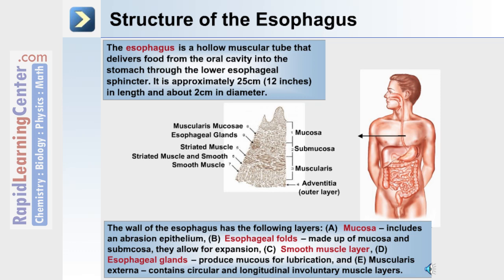The wall of the esophagus has the following layers: A) the mucosa, which includes an abrasion epithelium; B) esophageal folds, which are made of mucosa and submucosa and allow for expansion; C) a smooth muscle layer; D) the esophageal glands, which produce mucus for lubrication; and E) the muscularis externa, which contains circular and longitudinal involuntary muscle layers.